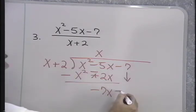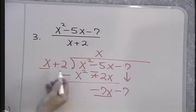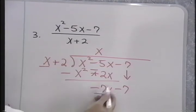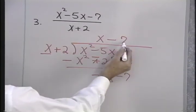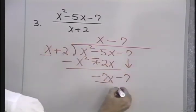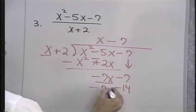Then, I bring down the next term, minus 7, and I go through the process again. I divide x into negative 7x by asking what I can multiply x by to get negative 7x, and the answer is negative 7. Now, I multiply negative 7 times positive 2, negative 14, and negative 7 times positive x, negative 7x.